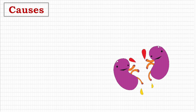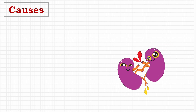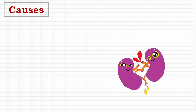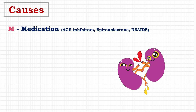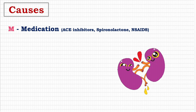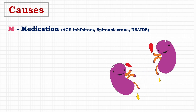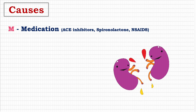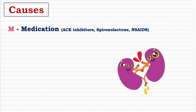Let's see the causes of hyperkalemia. The mnemonic MACHINE is used: M for medication, A for acidosis, C for cellular destruction, H for hypoaldosteronism, I for increased potassium intake, N for nephron damage, and E for excretion problem. The first is medication — drugs like ACE inhibitors and NSAIDs block the angiotensin-aldosterone regulation, decreasing the glomerular filtration rate and leading to potassium retention. Spironolactone is a potassium-sparing diuretic, therefore it also leads to high potassium levels.